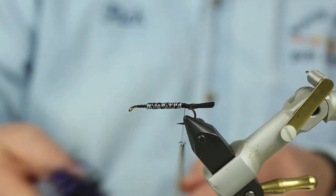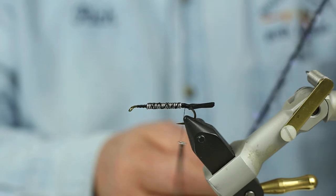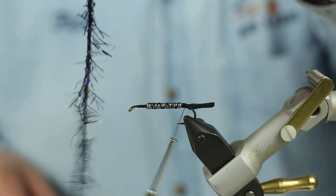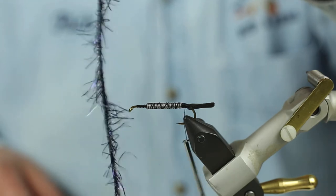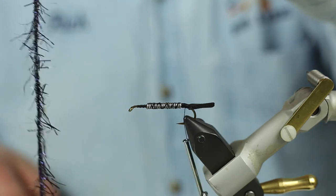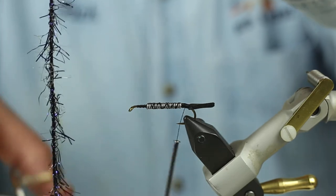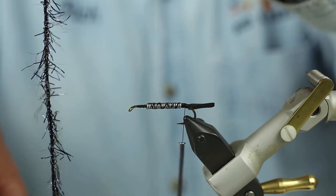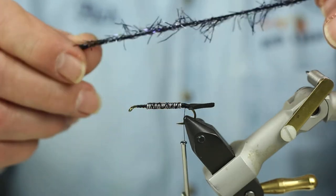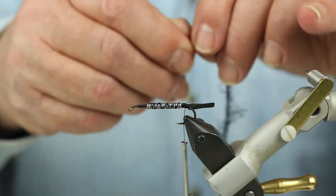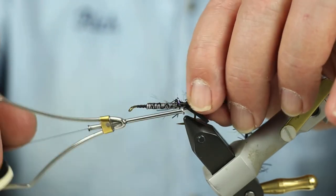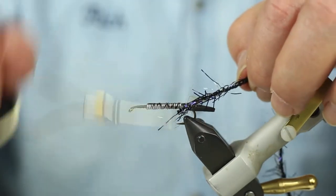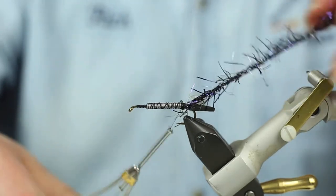Now I'm ready for the body. This is an easy fly to tie. This is UV Polar Chenille. It's in both purple and black, very sparkly. This is actually going to be the ribbing but it's going to represent the legs on this. And I'm going to cut about maybe a six to eight inch segment. I'm going to tie it in right in front of the tail. Lock it in place and let it hang back over the tail because I'm going to use it as a ribbon.